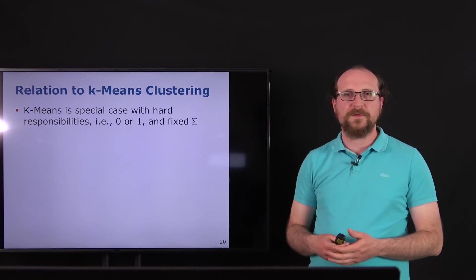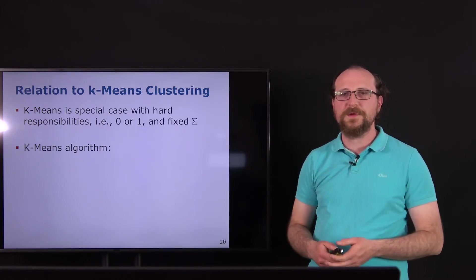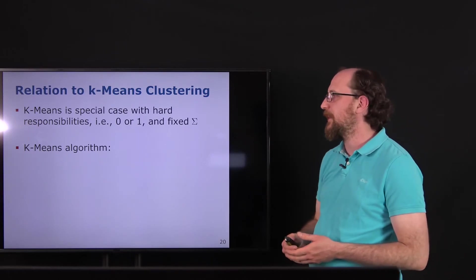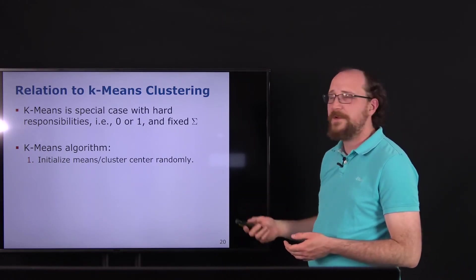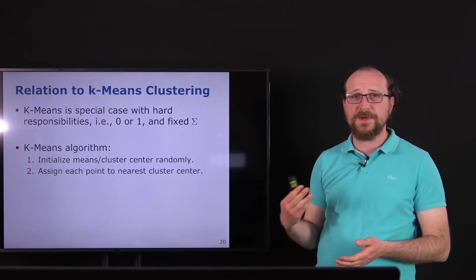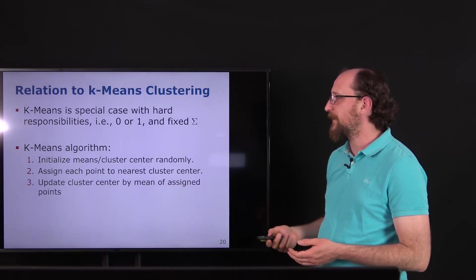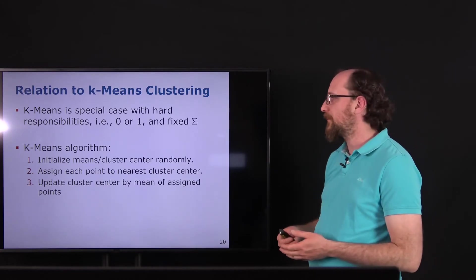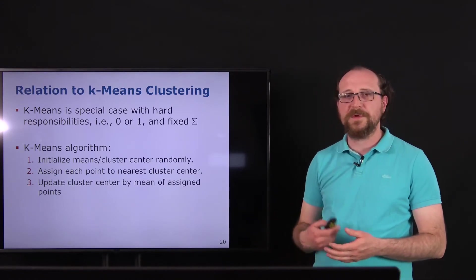In K-means, we do not think about responsibilities as distributions but assign points by closeness to cluster centers. The algorithm initializes cluster centers randomly by choosing points from the data, assigns each point to the nearest cluster center (corresponding to taking the argmax of p(h|x)), updates the cluster centers by averaging over all assigned points, and repeats until convergence.